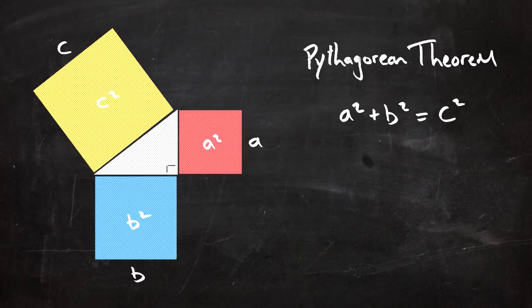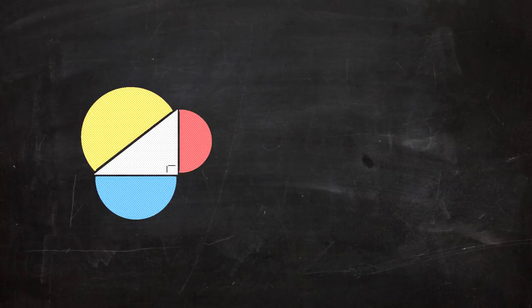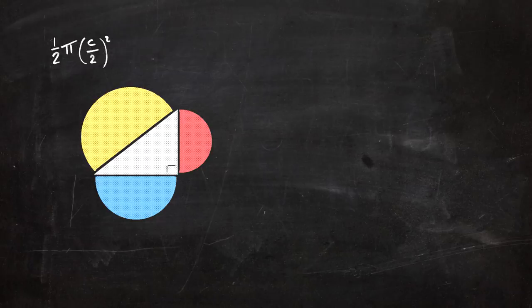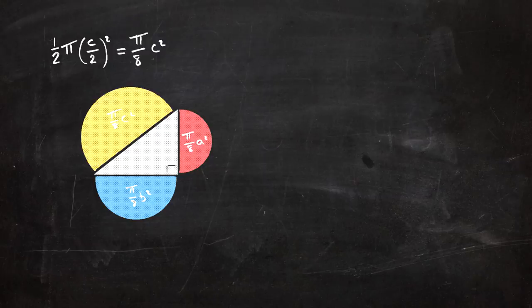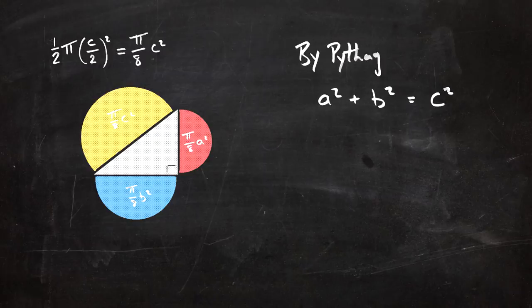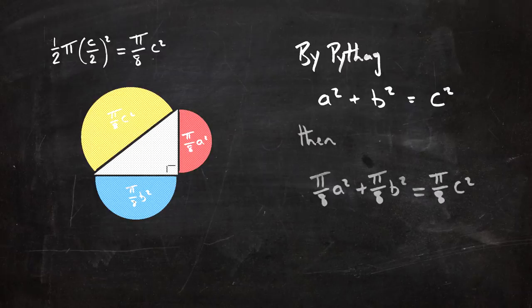But what about, instead of squares, I use semicircles? The area of a circle is pi times the radius squared. We're going to use half of that, and the radius would be c over 2. So we get one half times pi times (c/2) squared, which is pi over 8 times c squared. In the same way, the other semicircles will have areas of pi/8 times a squared and pi/8 times b squared. Now because Pythagoras' theorem is true, we know a squared plus b squared equals c squared, which automatically means pi/8 a squared plus pi/8 b squared equals pi/8 c squared. So the semicircle on the hypotenuse is equal to the sum of the semicircles on the other two sides — we have a Pythagorean theorem for semicircles as well.